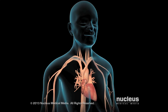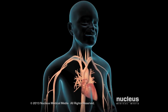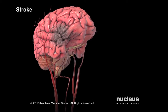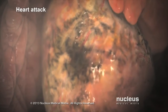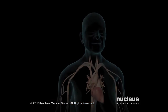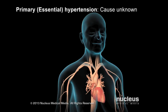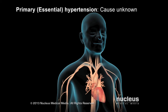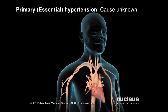Artery damage and reduced blood flow lead to conditions such as a stroke, heart attack, or kidney disease. In most cases, the cause of high blood pressure, or hypertension, is unknown. This type of high blood pressure is called primary, or essential hypertension.